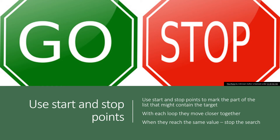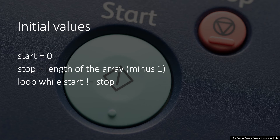Instead of slicing the list we use two markers to mark the limits of our search. Every time, instead of slicing the list in half, we just move those markers closer and closer together. Eventually the start and stop markers will both be pointing at the same value, and that will be the value we're searching for — or it's not in the list at all. We set the start marker at zero and the stop marker at the length of the array minus one, and we loop while those two values are different from each other.